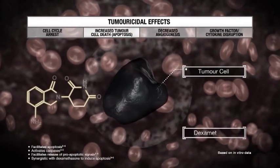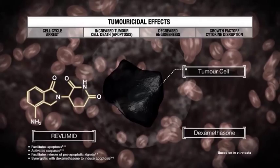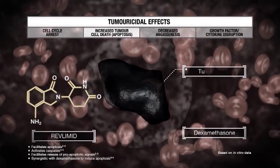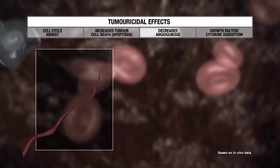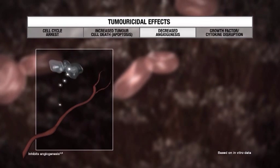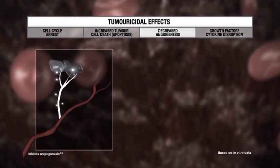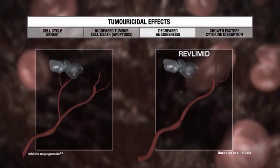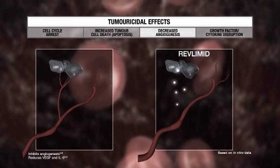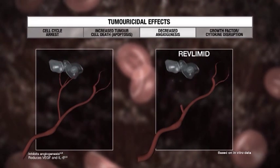The combination of dexamethasone with Revlimid has been shown in vitro to synergistically enhance tumour cell apoptosis. Revlimid has also been shown to inhibit angiogenesis, which involves the growth of nutrient-supplying blood vessels to the tumour cells, by significantly reducing vascular endothelial growth factor and interleukin-6 levels.